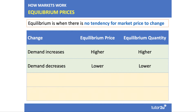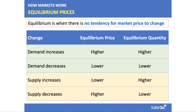If there's a fall in demand, the equilibrium price will fall and there'll be a contraction of quantity supplied. If there's an outward shift of supply, ceteris paribus, the equilibrium price will be lower but the equilibrium quantity produced will be higher. But if there's a fall in supply, again other things remaining the same, the price will go up but the equilibrium quantity bought and sold will be lower.